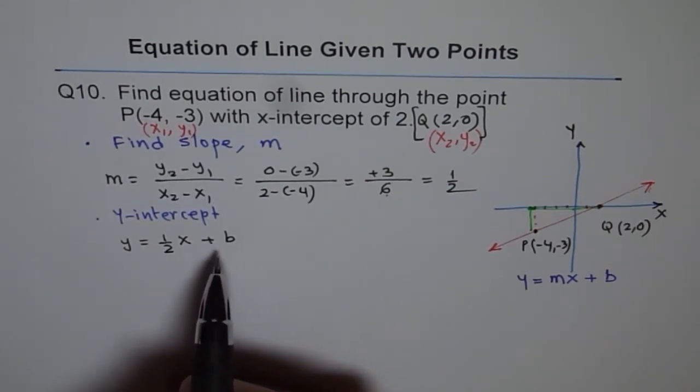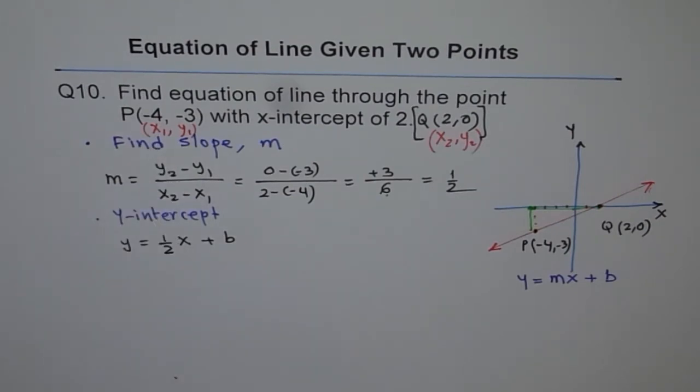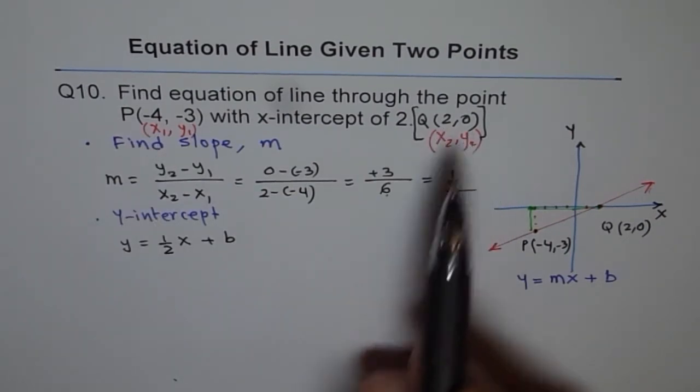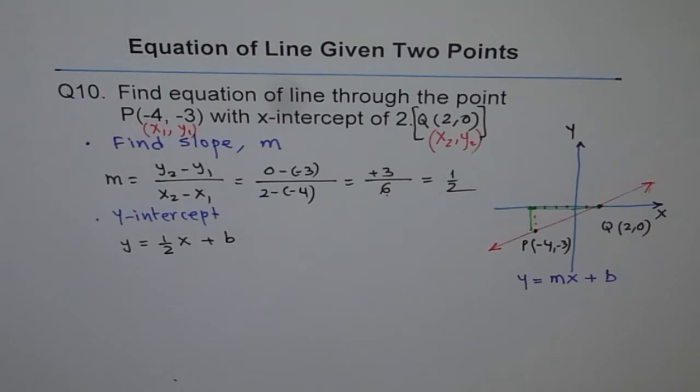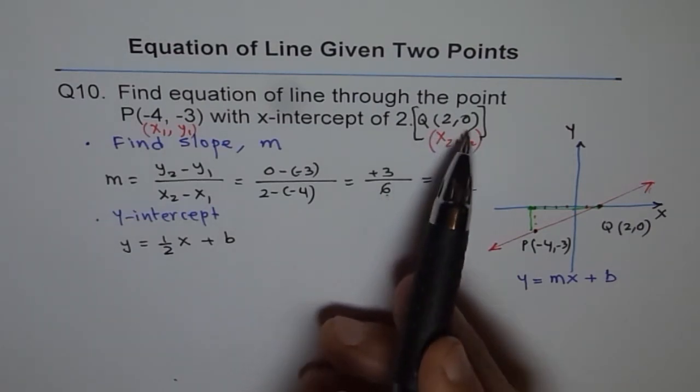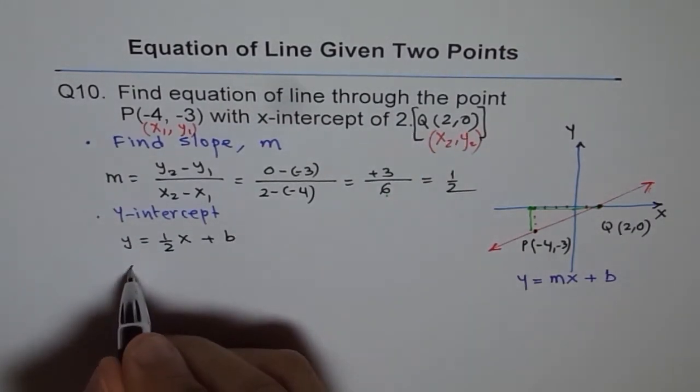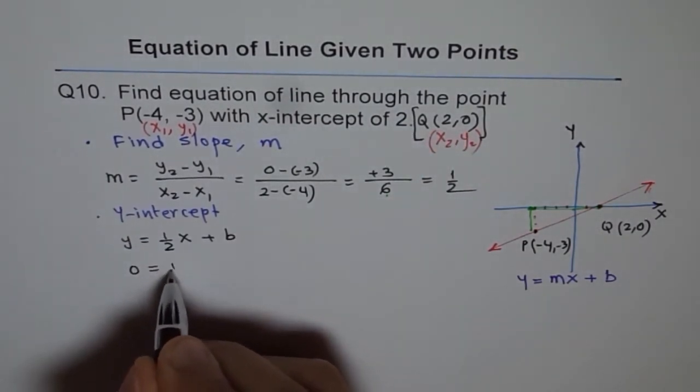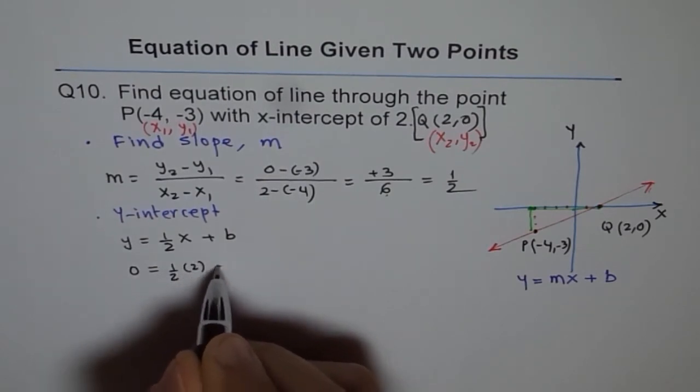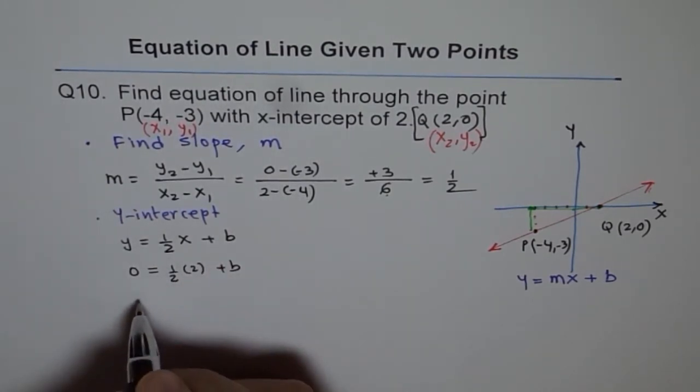To find b, select a point. So good point to select is (2, 0). Both are positive. One of them is 0. It helps to solve. So (2, 0) means x value of 2, y value of 0. So let's write 0 for y and 2 for x and figure out what b is.